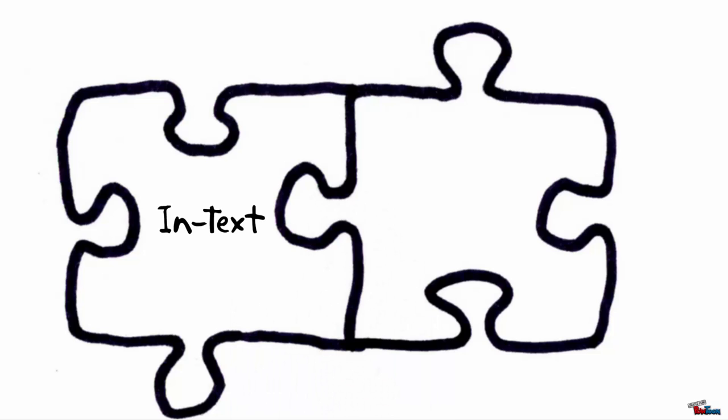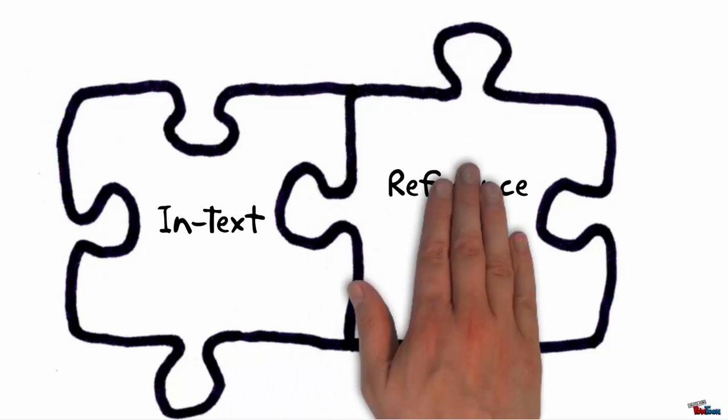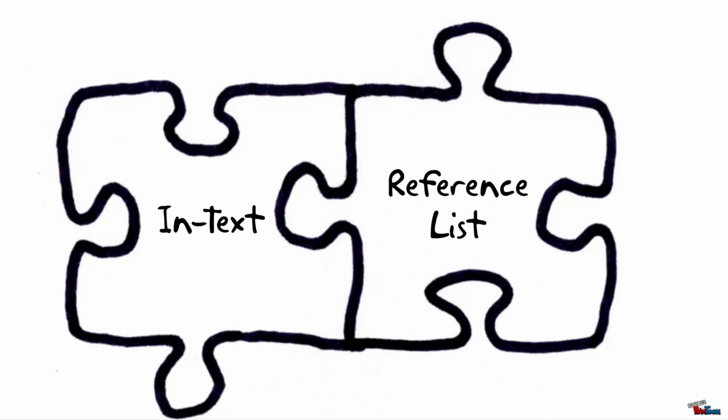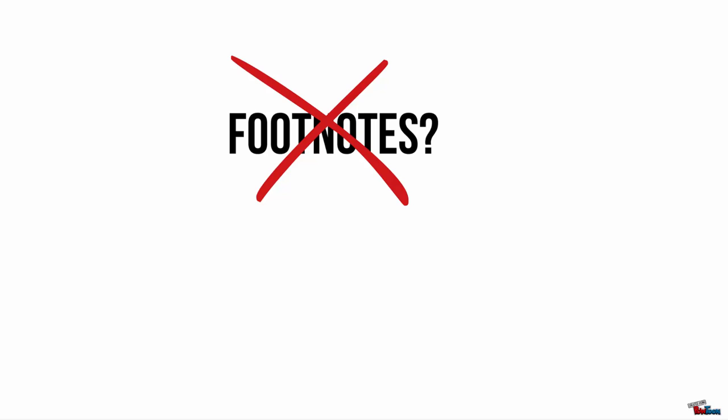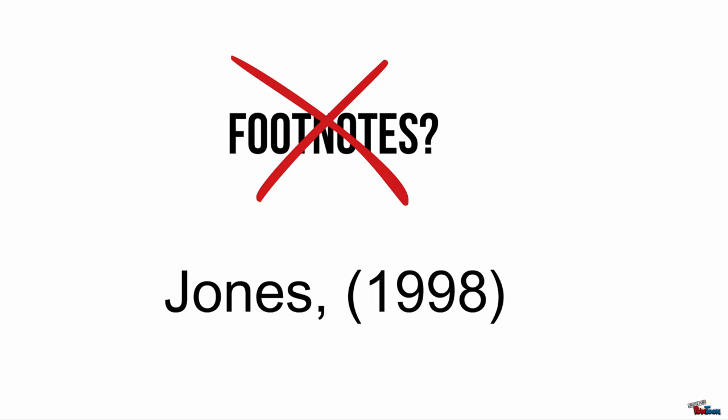Citations are two pieces: an in-text citation and a reference list. First, we'll talk about in-text. When using APA format, do not use footnotes. Instead, follow the author-date method of in-text citation. This means that the author's last name and the year of publication for the source should appear in the text. For example, Jones 1998.